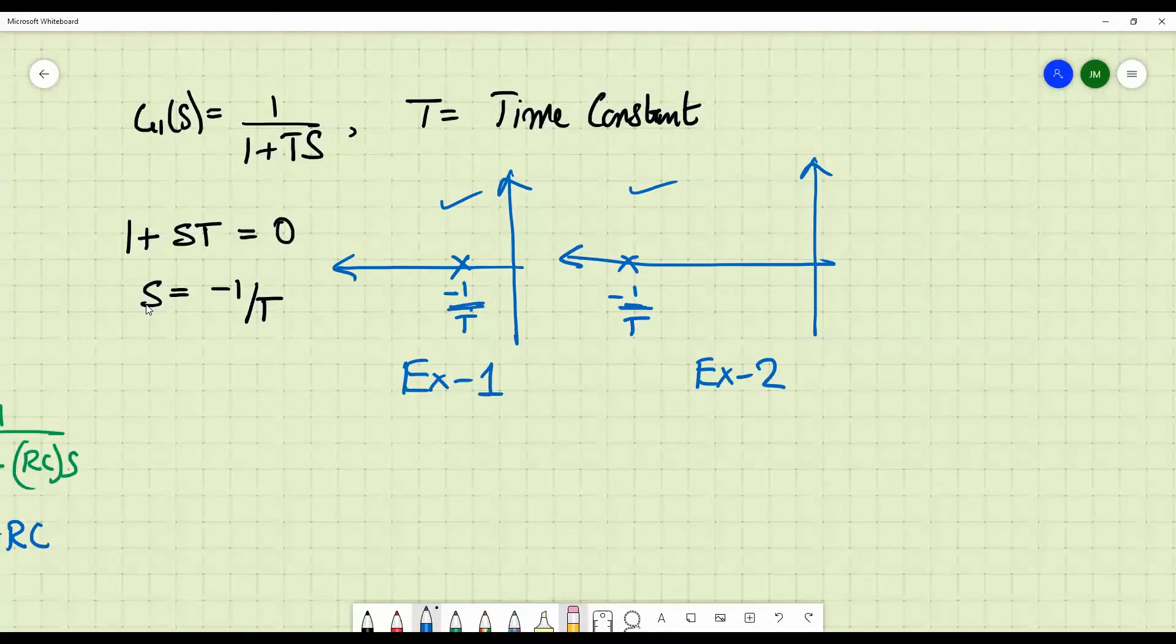First case. In the first case, T will be high. Why? Because in the first case, 1 by T is very small. Because it is quite near the j omega axis, which means T is high.